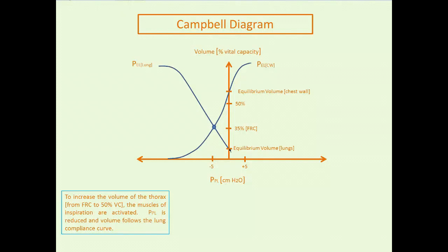Now let's talk about what happens when you want to increase the volume of the thorax — say, from functional residual capacity to half a vital capacity. For all intents and purposes, this is like a normal tidal volume breath in a patient with normal lungs and chest wall. While the muscles of inspiration are activated, the pleural pressure will reduce from FRC to the point along the pulmonary elastance curve that reaches your new higher lung volume.